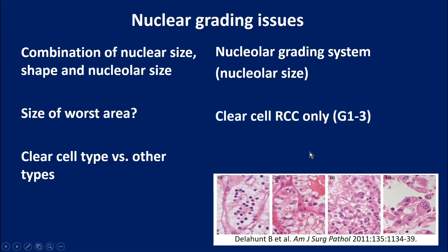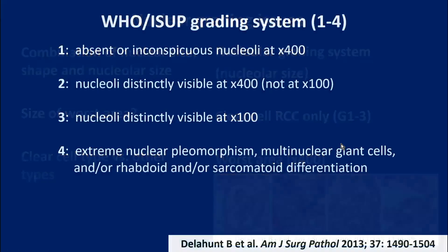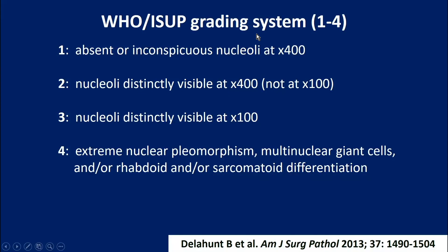This system was validated in clear cell renal cell carcinoma initially. The worst area was defined at 100x magnification. The WHO grading system also has four grades. Grade 1 represents cells with absent or inconspicuous nucleoli — they look like lymphocytes at 400x magnification. If the nucleoli are distinctly visible at 400x, that's nuclear grade 2. Nuclear grade 3 is when the nucleoli are distinctly and easily visible at 40x or 400x magnification.